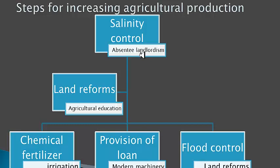These lands can be made cultivable through land reforms. Land reforms should be carried out so that farmers who do not have their own land are provided with land, enabling farmers to cultivate with interest, hard work, and dedication. This will increase agricultural production and the economy will automatically progress.